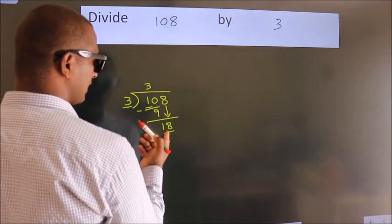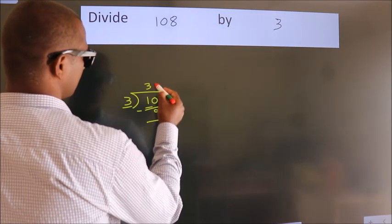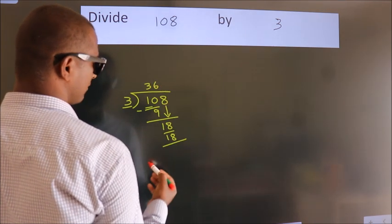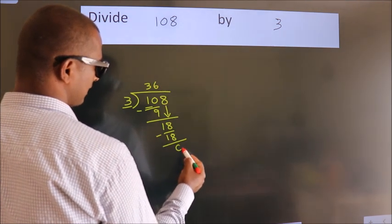When do we get 18? In 3 table. 3, 6, 18. Now, we subtract. We get 0.